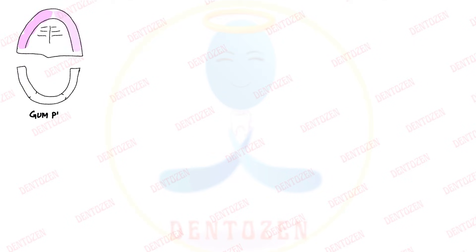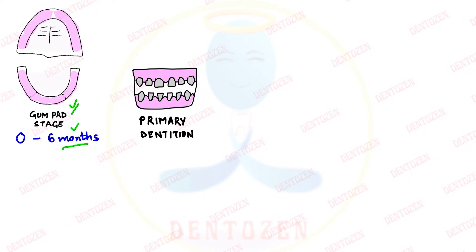Welcome to Dentizen. What do you see in the mouth of a newborn? There are no teeth, but there are pink fibrous gums — one in the maxilla and one in the mandible. These are called gum pads, and this stage is called the gum pad stage, which is from zero to six months of life, because at six months our first primary teeth — the mandibular central incisors — start to erupt.